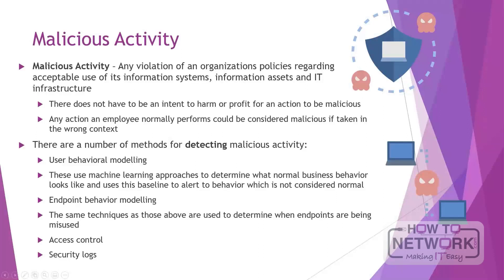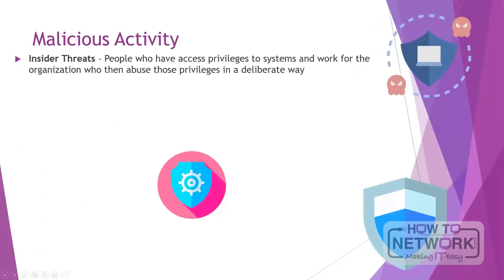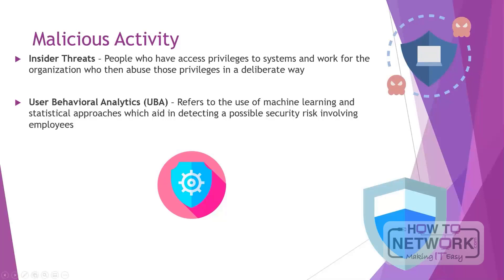There are a number of methods which can be used to detect malicious activity. User behavioral modeling uses machine learning approaches to determine what normal business behavior looks like and uses this baseline to alert to behavior which is not considered normal. Endpoint behavior modeling uses the same techniques to determine when endpoints are being misused. Access control and security logs also play a role. Insider threats are people who have access privileges to your organization and systems and work for the organization who then abuse those privileges in a deliberate way — these can often result in some of the most significant breaches in an organization. User behavioral analytics, or UBA, refers to the use of machine learning and statistical approaches which aid in detecting a possible security risk involving employees. Analytics algorithms look for patterns of data collected about model behavior while also looking for data which points to changes in behavior which diverge from a known and understood pattern.